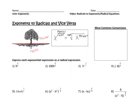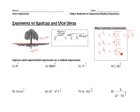The most common conversions we'll use are x to the one-half, x to the one-third, and x to the one-fourth. Since the two, three, and four are on the bottom, they're considered the roots, and the one is considered the power. So x to the one-half is the square root of x, x to the one-third is the cube root of x, and x to the one-fourth is the fourth root of x. Those are the most common conversions you may want to memorize.